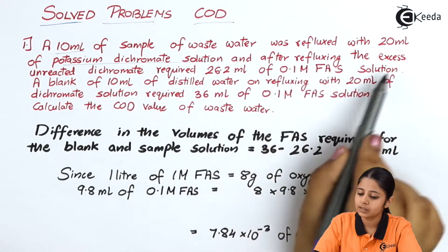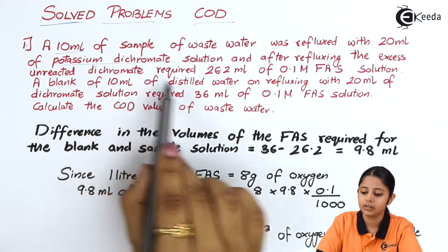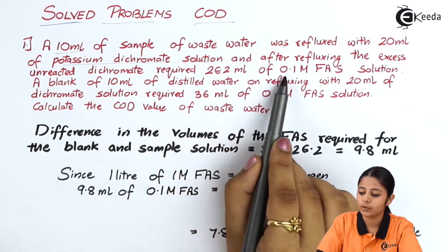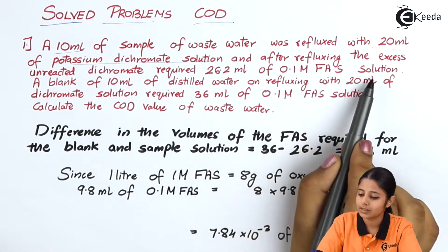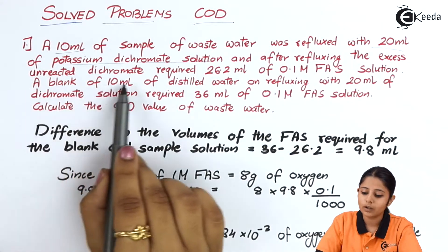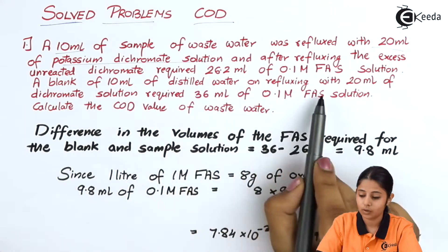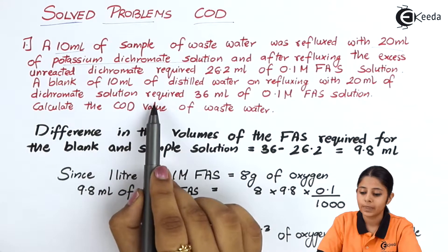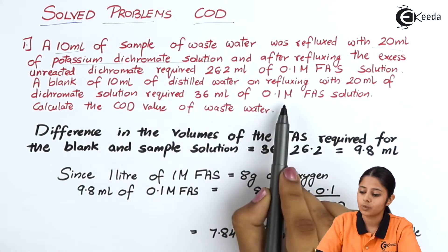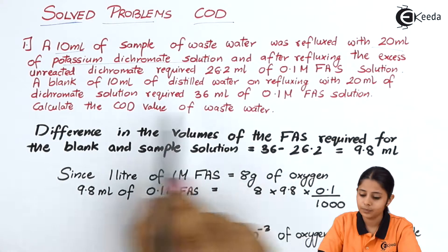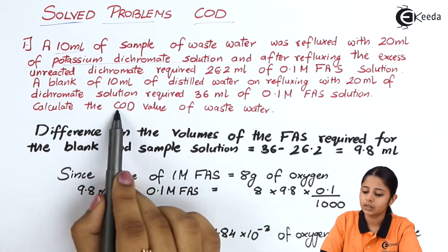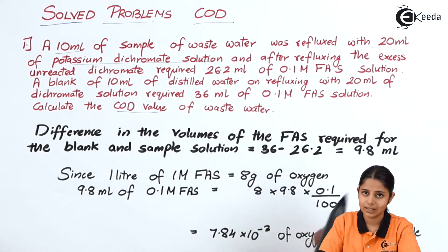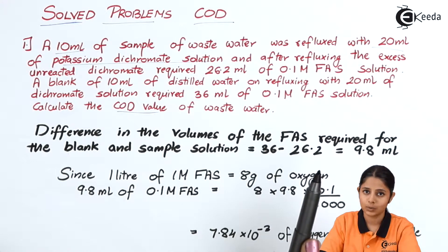After refluxing, the excess unreacted dichromate required 26.2 ml of 0.1 molar FAS solution. A blank of 10 ml of distilled water, on refluxing with 20 ml of dichromate solution, required 36 ml of 0.1 molar FAS solution. We will now calculate the COD value from these figures.